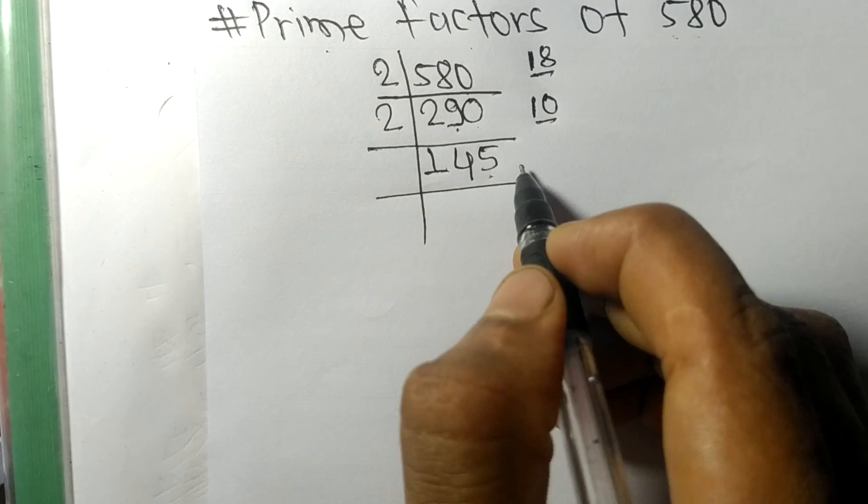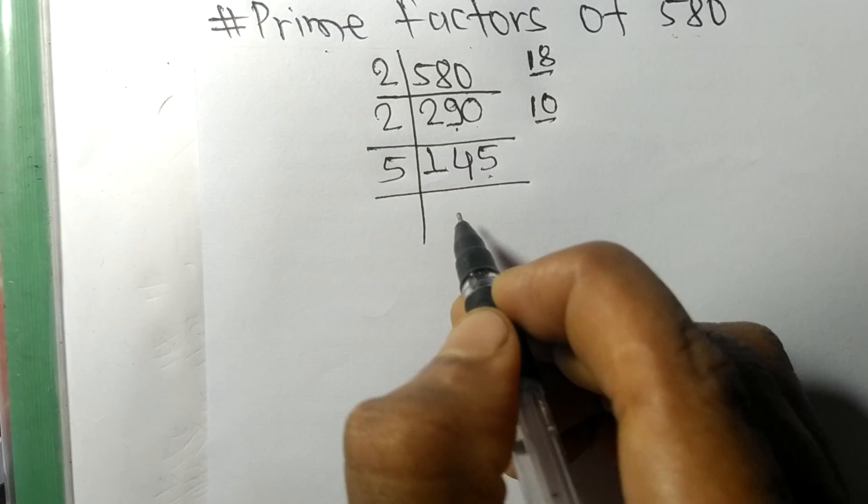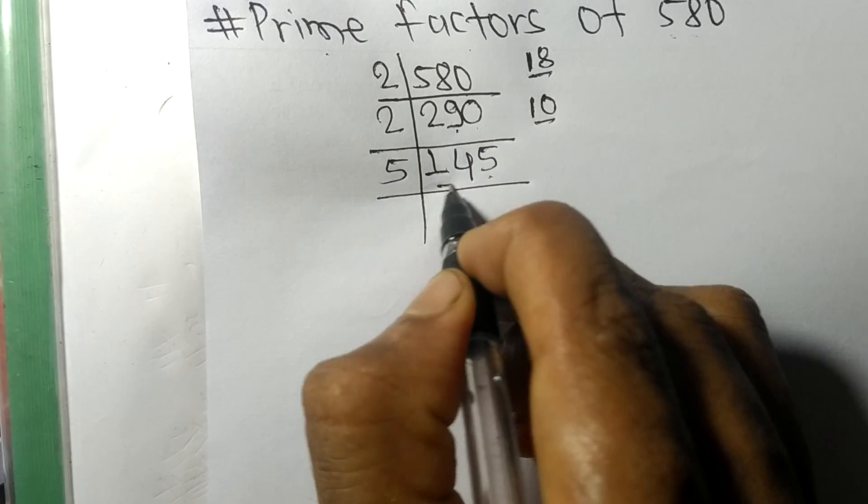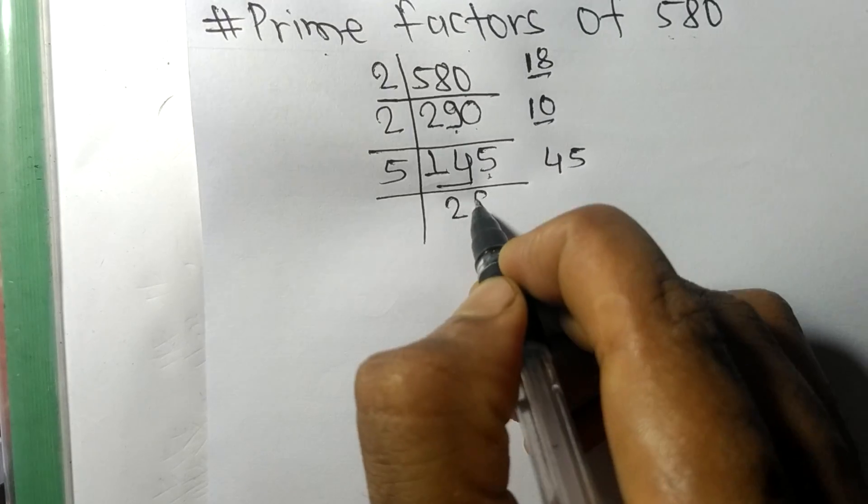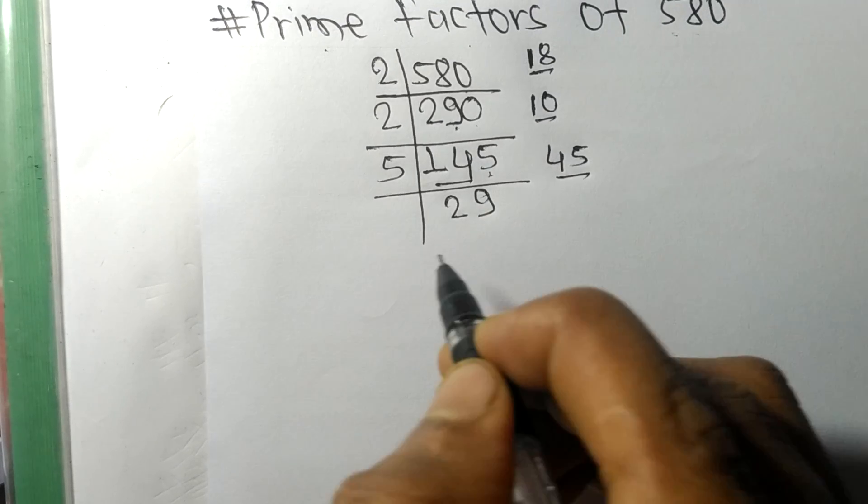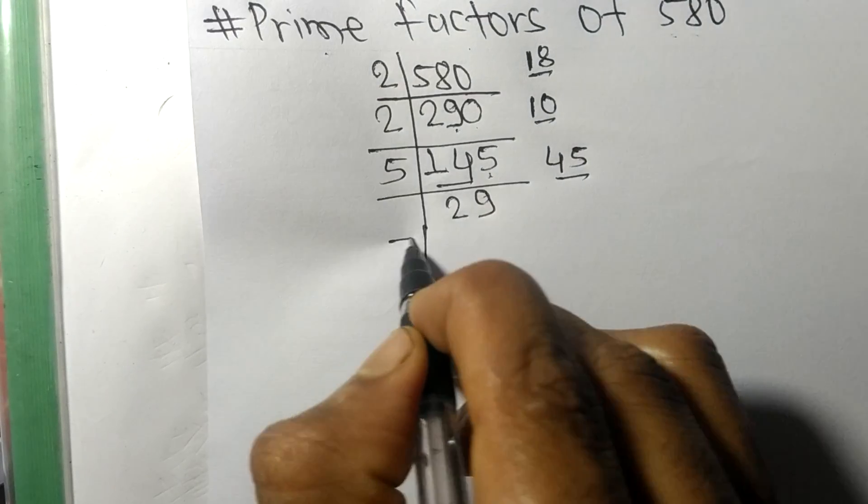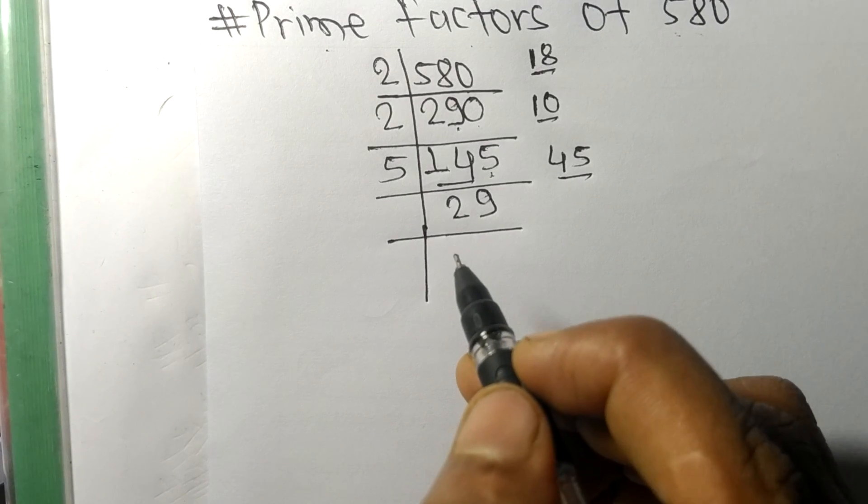the last so it is divisible by 5. 5 times 2 means 10 remainder 4, and this 5. 45, 5 times 9 means 45. So now we got 29 which is a prime number.